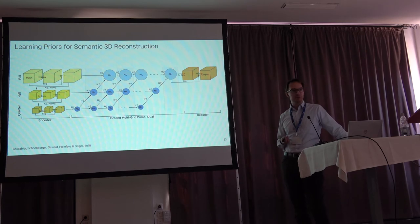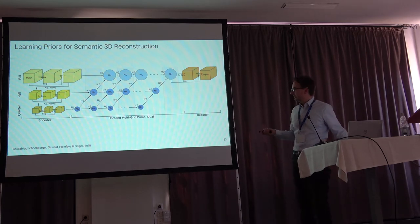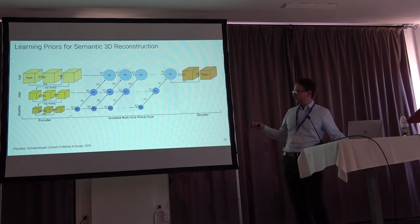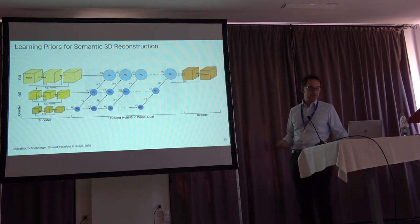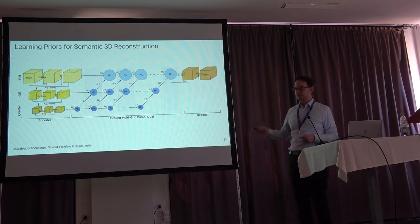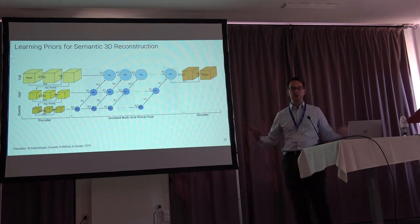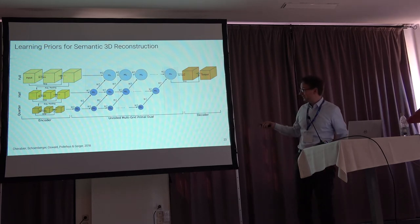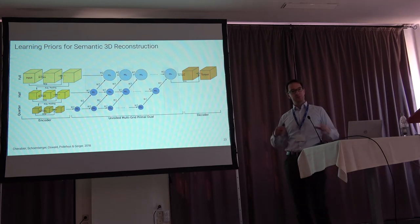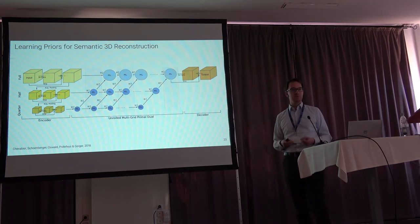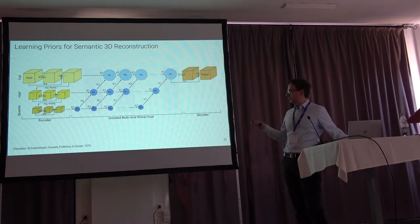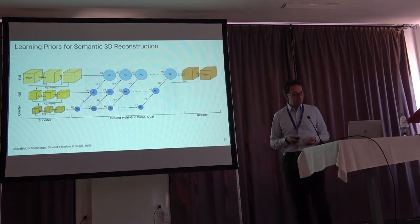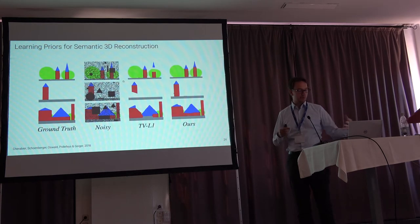We unroll the inference at multiple levels in an image pyramid. There's a CNN front-end that takes the data and puts it into 3D space, and a CNN back-end that decodes the output to the final representation. Inside the unrolled inference we relax the algorithm and give it more parameters to generalize it. Because it's end-to-end trainable, we can optimize all parameters — including local correlations of semantic class labels — end-to-end with the front-end and back-end.